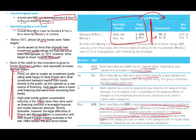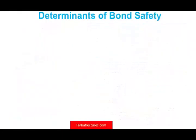So how do rating agencies determine whether a bond is triple-A, double-A, or triple-C? They look at certain financial indicators. Let's look at a few important ones — not the only ones, but key indicators.